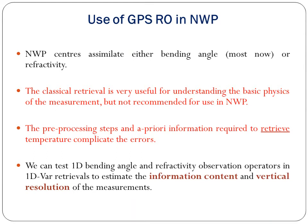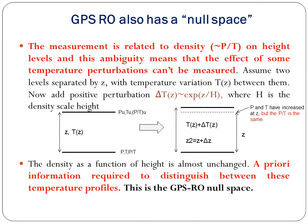In NWP, centers assimilate either bending angle or refractivity. The classical retrieval is useful for understanding the basic physics but is not recommended for use in NWP, as preprocessing steps and prior information required to retrieve temperature complicate the errors. One-dimensional bending angle and refractivity observation operators can be tested in 1D-Var retrievals to estimate information content and vertical resolution. GPS RO also has a null space: the measurement is related to density, approximately equal to P over T at height levels, meaning some temperature perturbations cannot be measured.